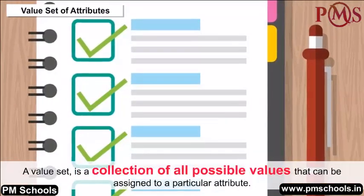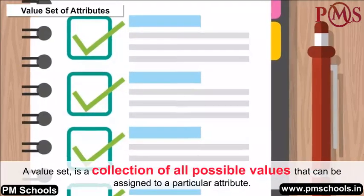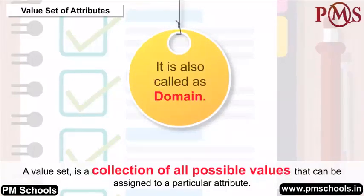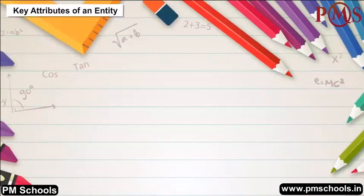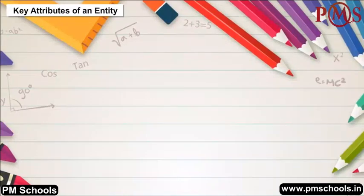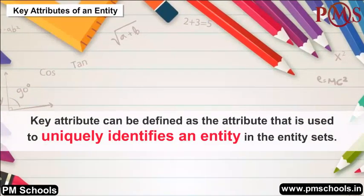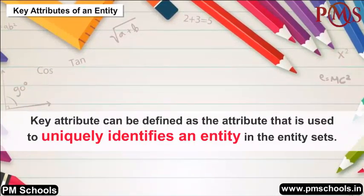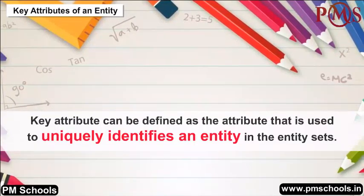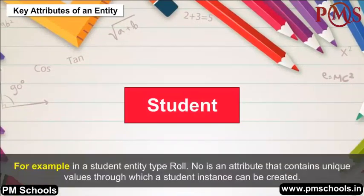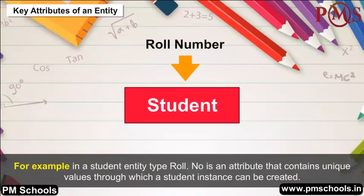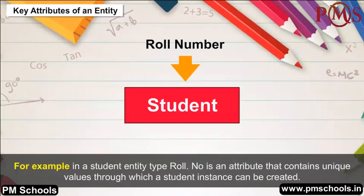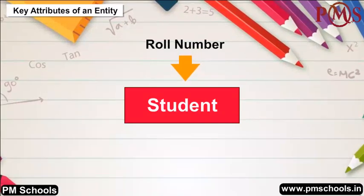Value Set of Attributes: A value set is a collection of all possible values that can be assigned to a particular attribute, also called a domain. Key Attributes of an Entity: A key attribute is the attribute used to uniquely identify an entity in the entity sets. For example, in a student entity type, roll number is an attribute containing unique values to identify a student instance.